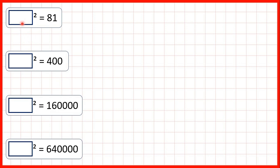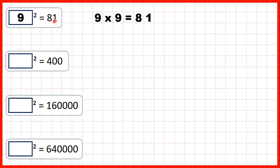Now, what squared equals 81? Well, 9 times 9 is 81, so 9 squared is 81. We could say that the square root of 81 is 9.